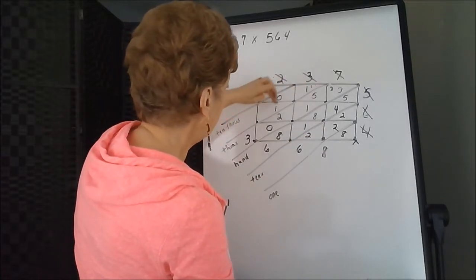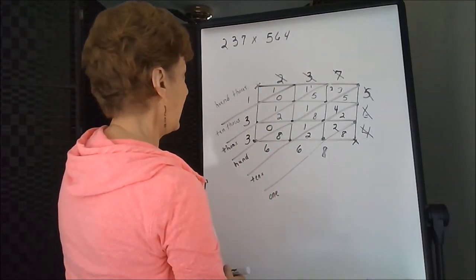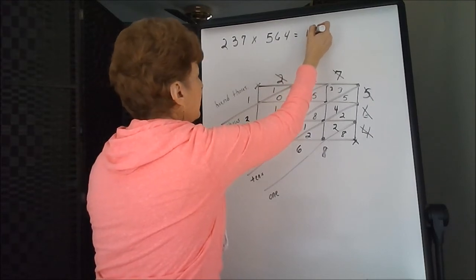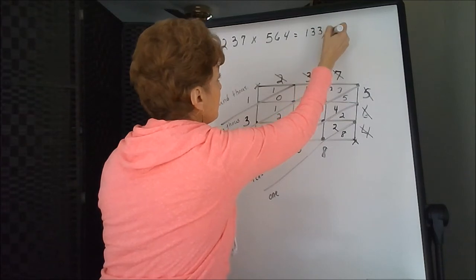One, two, and three. And our lone one. So the answer to this problem is one hundred thirty-three thousand six hundred sixty-eight.